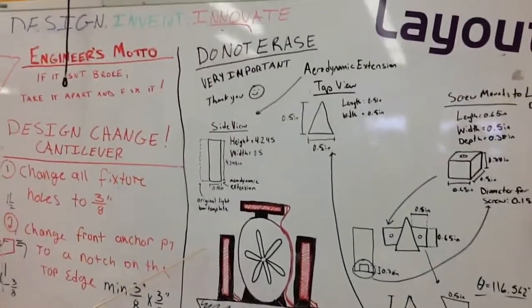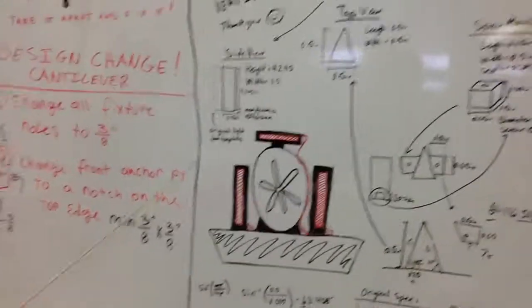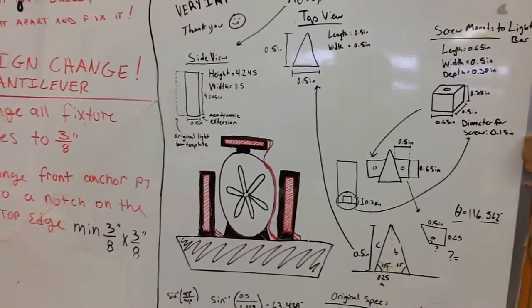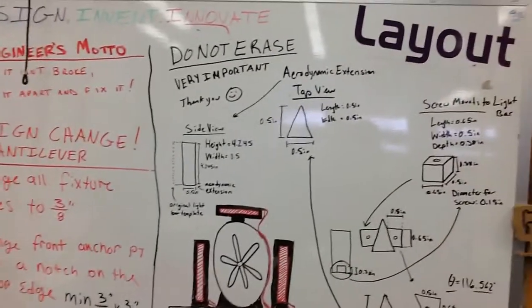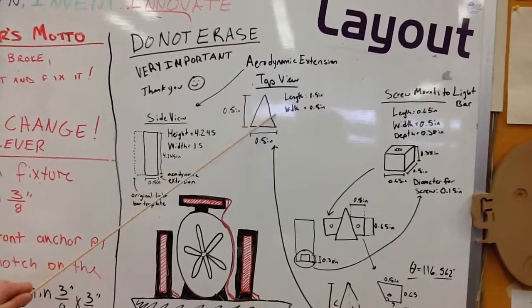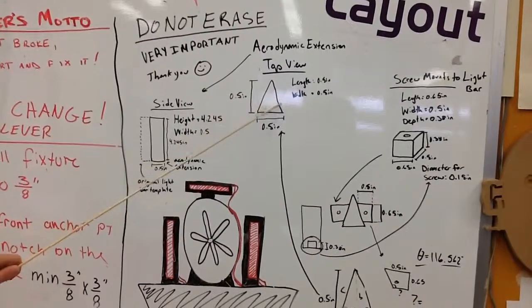We already have a template for the LEDs, and we decided to make it more aerodynamic. Rather than one straight block standing up, from the top view it would be triangular in shape. That way it deflects the wind on either side, making it more aerodynamic.